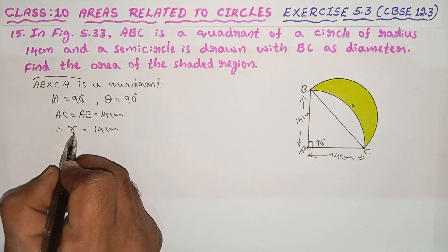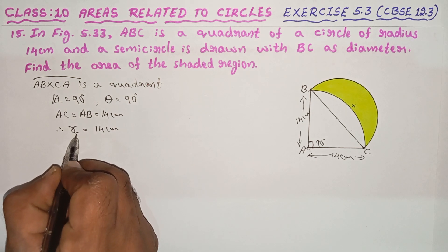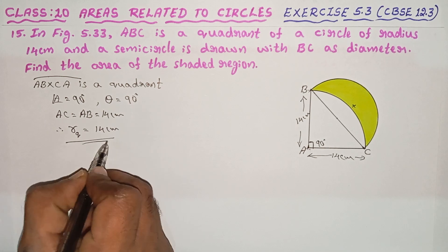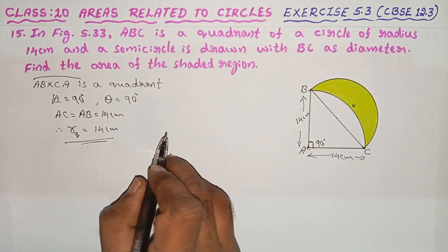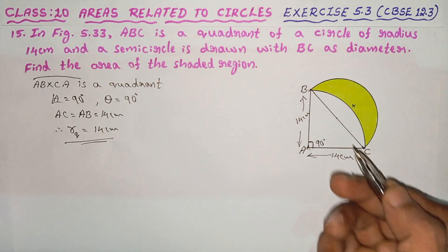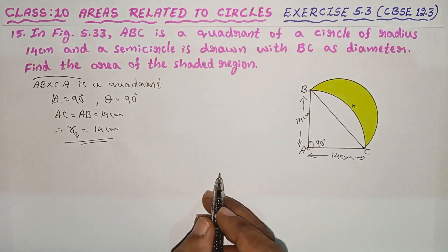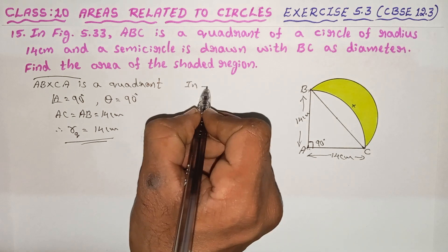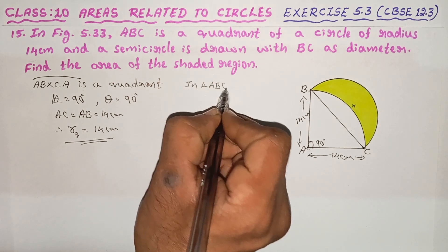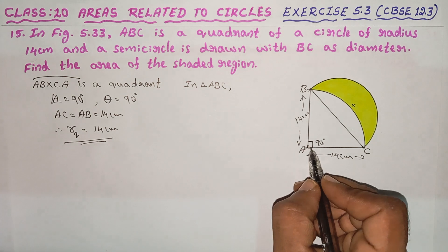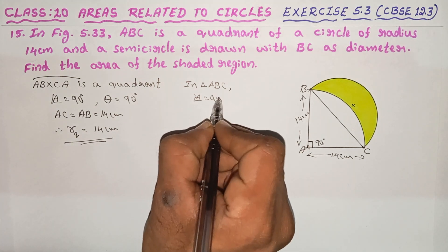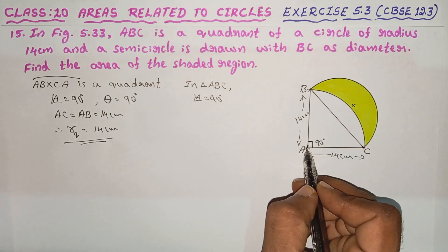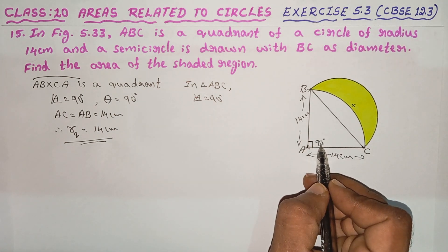The radius of the quadrant is 14 cm. The radius of the quadrant is equal to 14 cm. If you have a triangle, you can use A-B-C and triangle. This triangle is A-B-C.